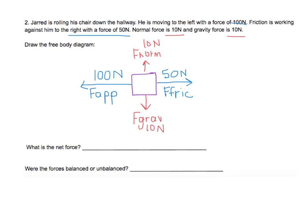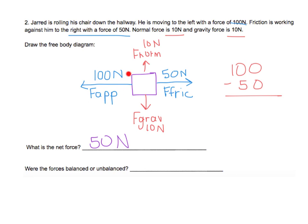Now it's time to calculate the net force. Whenever calculating the net force, we're only going to look at arrows or vectors that are opposite of each other. First we look at the vertical forces — both gravity and normal force are going opposite of each other at 10 Newtons each. When they're going in opposite directions, you subtract: 10 minus 10 is zero. That simply means Jared rolling in the chair is not going up into the sky or down into the ground. Now we look at the horizontal forces: 100 Newtons to the left and 50 to the right. When they go in opposite directions, we subtract and get 50 Newtons. Since 100 is larger than 50, the object is going to be going to the left. So on our net force, we include an arrow to the left, and since this object is in motion, it is unbalanced.